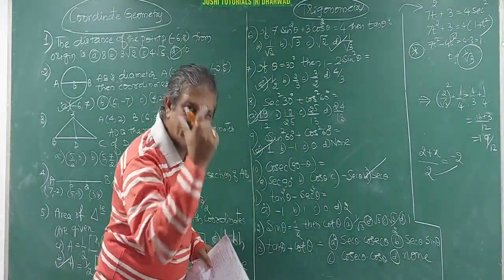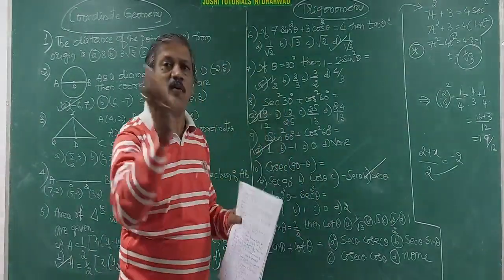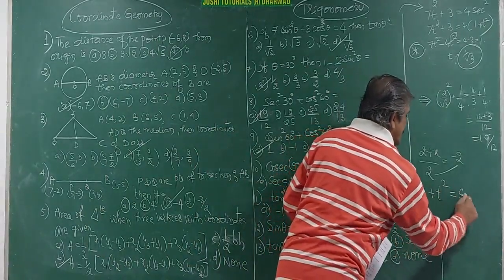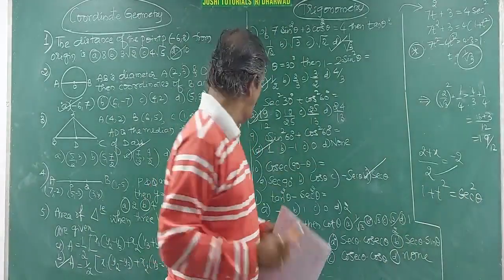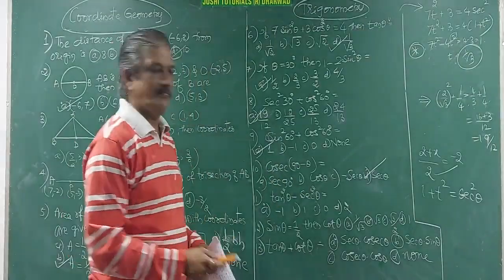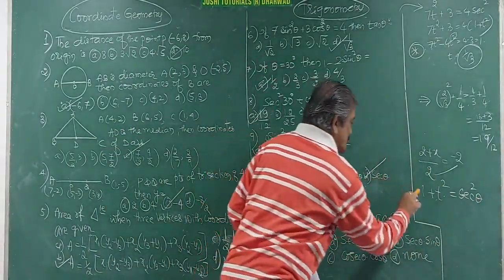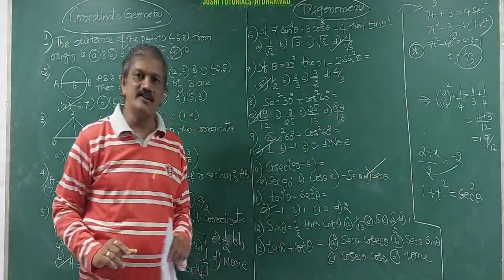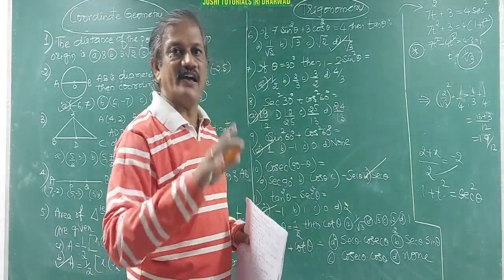A slightly twisted question: tan²θ − sec²θ. Remember 1 + tan²θ = sec²θ. Rearranging: tan²θ − sec²θ = −1. Shift +1 to the right side and it becomes −1. This is not directly in the textbook but you must know it from the formula.